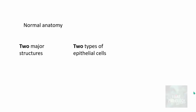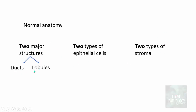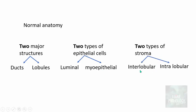So what is the normal anatomy of breast? Normal anatomy of breast is quite simple to understand. It has two major structures — ducts and lobules. It has two types of epithelial cells — the luminal cells and the myoepithelial cells. And the two types of stroma are the interlobular stroma and the intralobular stroma.